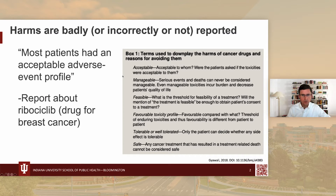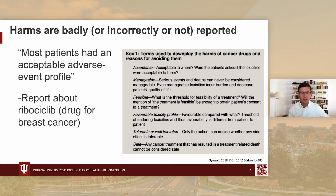Here are some examples of the way that harms are sometimes reported in clinical trials. You can see words like 'acceptable,' 'manageable,' and 'feasible' are used, and it's unclear sometimes what these terms mean. If you can imagine what the analogous reporting would look like for benefits — if we said the intervention was 'sufficiently beneficial' or 'acceptably beneficial' — people wouldn't accept that. So it's a bit striking that we see this sort of language about harms when they're reported.